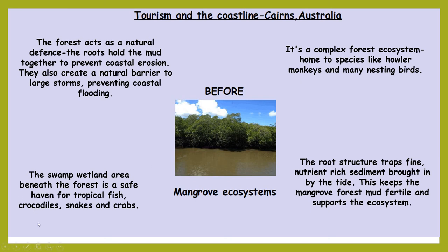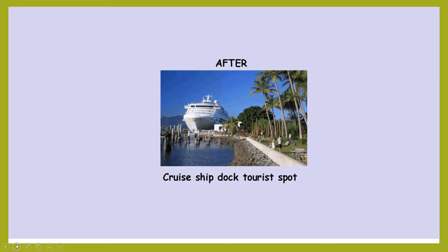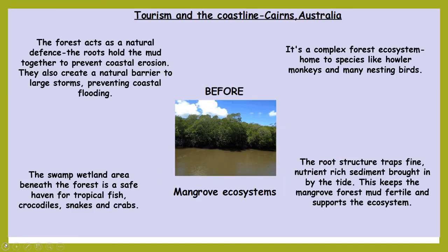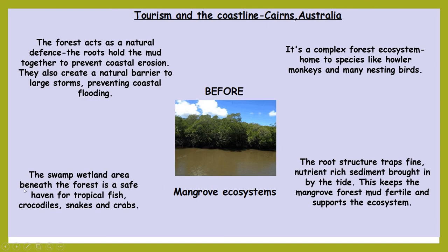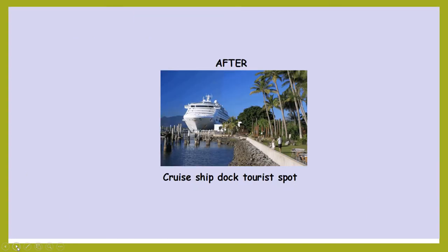Now we're going to look at the after. Here is a prime example — this is the image from the start. Believe it or not, this area used to look exactly like the natural mangrove habitat. It's actually just a little bit further down the coastline from where that image was taken, and that area is yet to be developed. This area on the eastern coastline of Australia is now a cruise ship dock tourist spot — basically a spot-the-difference. This would have been 100% natural mangrove ecosystem.